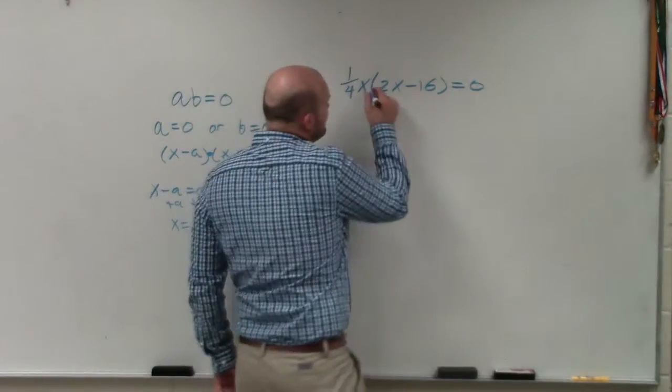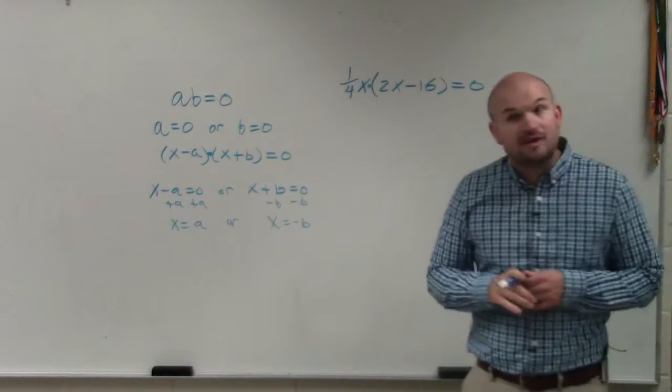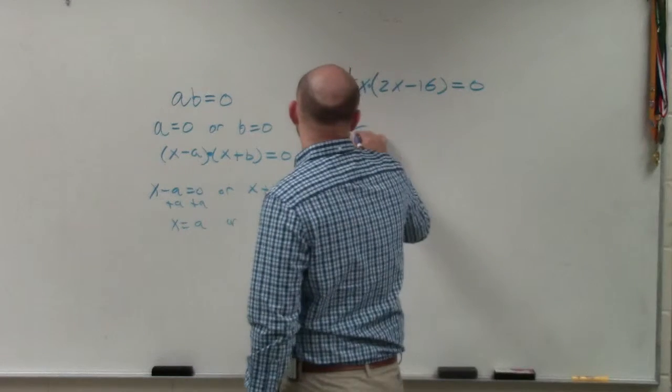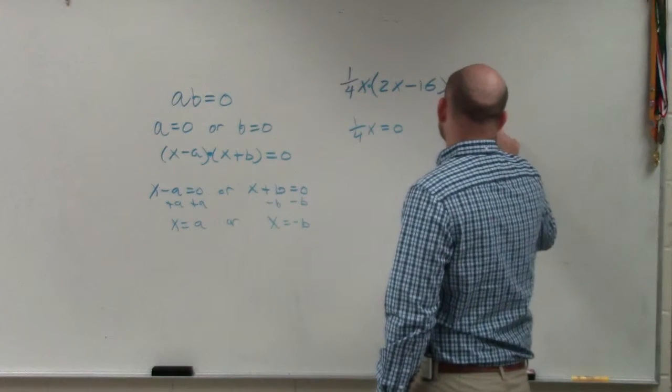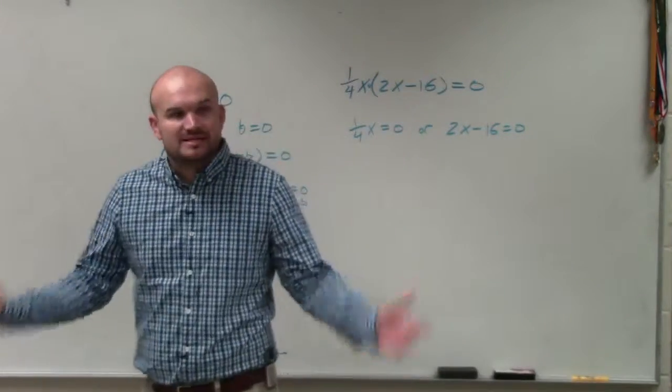So in this case, you guys can see we have the product of a monomial times a binomial. So therefore, if I know that the product is equal to zero, I basically just set the product of each of those expressions equal to zero. And then you basically just go ahead and solve.